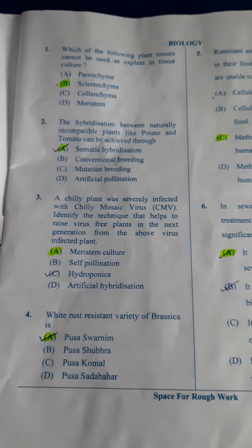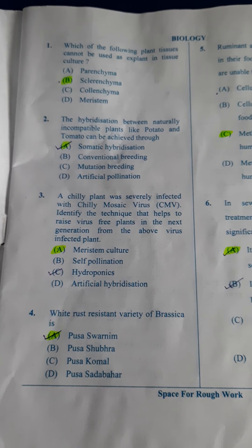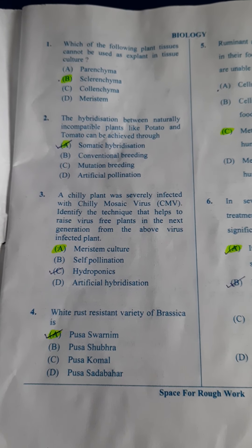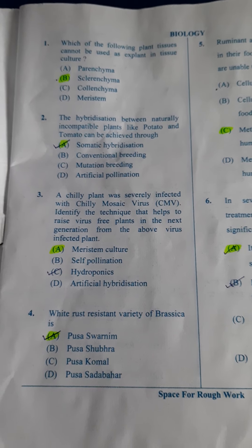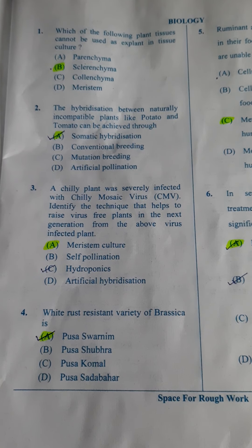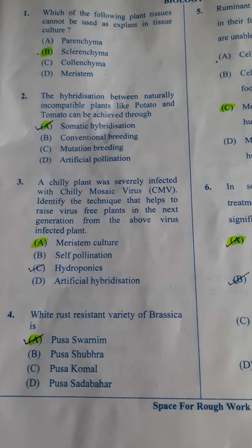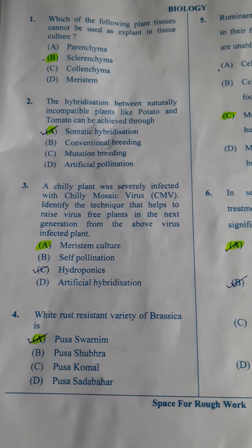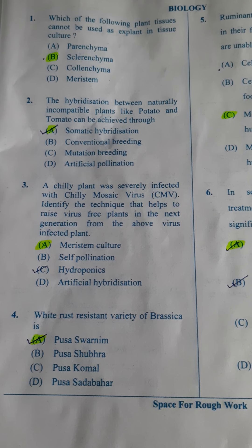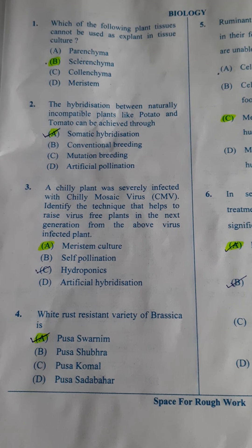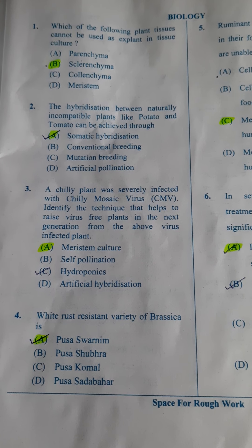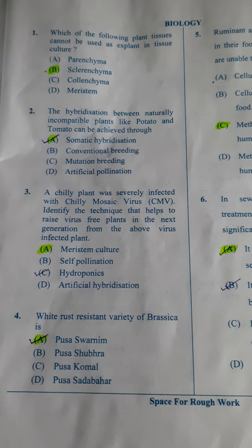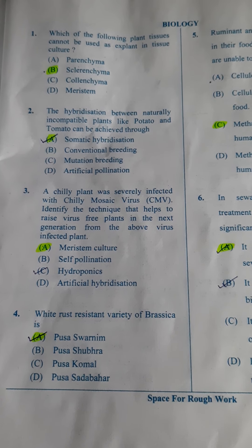Question two: The hybridization between naturally incompatible plants like potato and tomato can be achieved through — basically incompatible means the plants which cannot reproduce. In this case, somatic hybridization will help you to get the offspring. So the answer here is A.